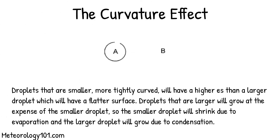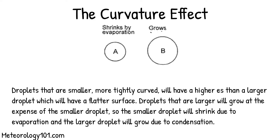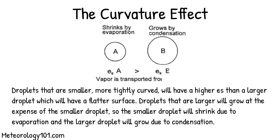Droplets that are smaller and more tightly curved will have a higher saturation vapor pressure than a larger droplet, which will have a flatter surface. Droplets that are larger will grow at the expense of the smaller droplet. Smaller droplets will shrink due to evaporation and the larger droplet will grow due to condensation.